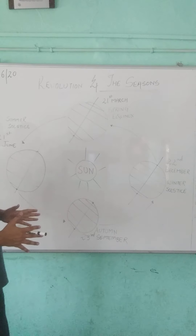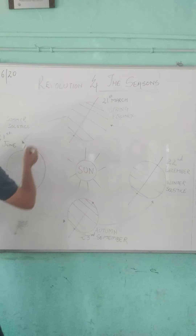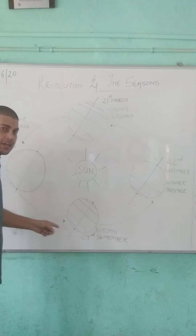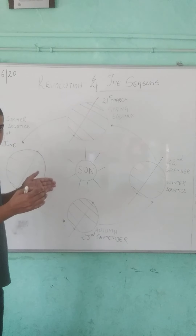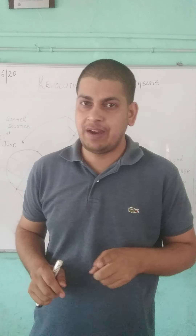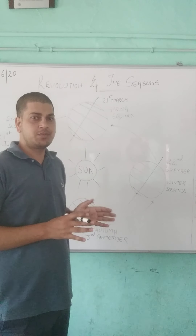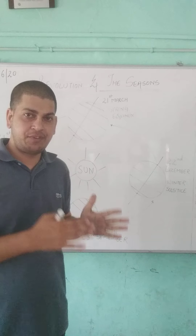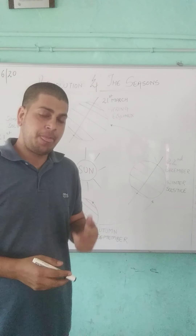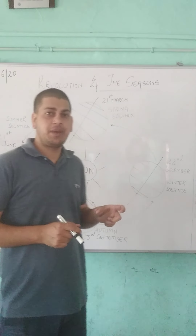365 and 1/4 days is the exact time the earth takes to move around the sun from one particular location back to that location. But instead of 1/4, we just include 365 days in a year to avoid confusion. So a year becomes 365 days. But after every 4 years we have a leap year with 366 days.